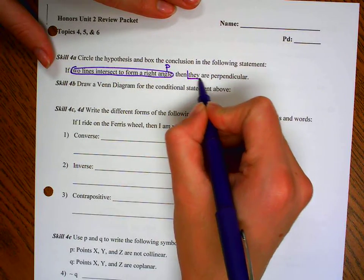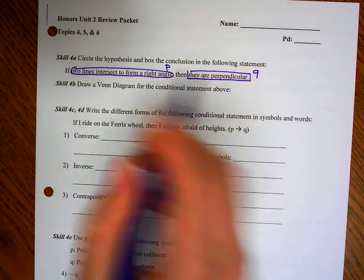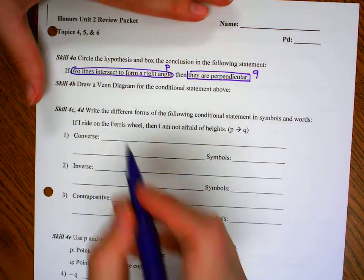The conclusion comes after the word then, so there's my Q, they are perpendicular. Make sure the word if is not part of P, the word then is not part of Q.